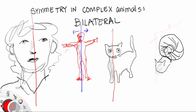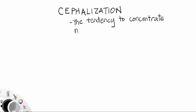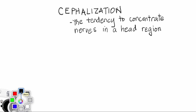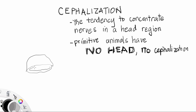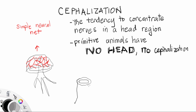The next evolutionary trend is known as cephalization. This is the tendency to concentrate nerves in the head region. Primitive animals have no head and no nerves. A jellyfish has only a neural net that is evenly spread out throughout its entire body, and a sea sponge has no nerves at all.